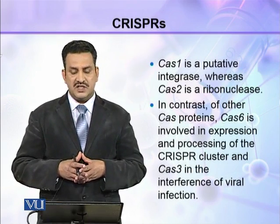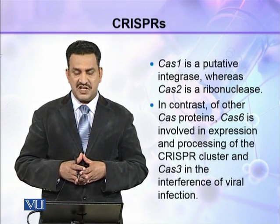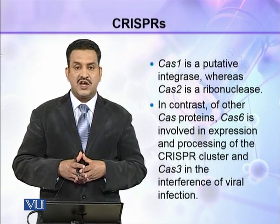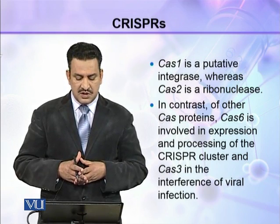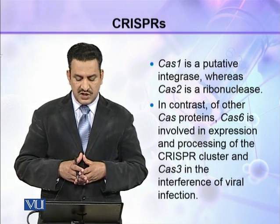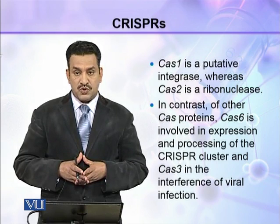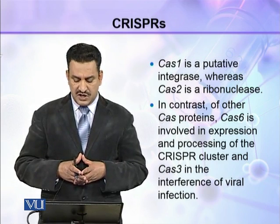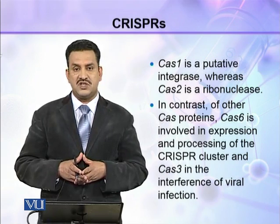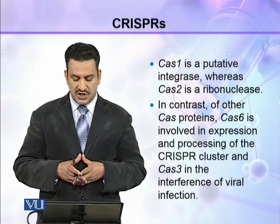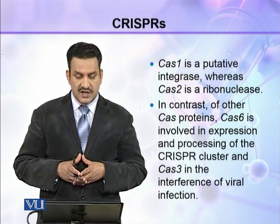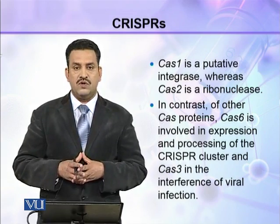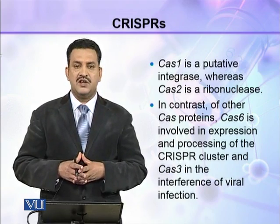The products of the Cas1, Cas2, and Cas4 genes fall into the acquisition category. Cas1 is a putative integrase whereas Cas2 is a ribonuclease. In contrast to other Cas proteins, Cas6 is involved in expression and processing of the CRISPR cluster, and Cas3 is involved in interference of viral infection.